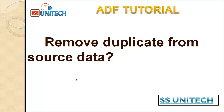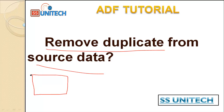Hello, welcome to SS Winitech. Susil this side and today we are going to see about removing duplicates from source data. For example, if we have a certain file and we want to load the data from that file, and this file is available on Azure Blob Storage or any other source, before loading into the destination we first need to check whether we have duplicate data and if so, remove it.